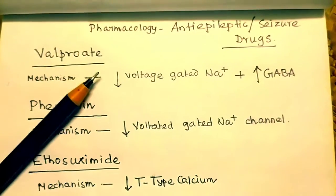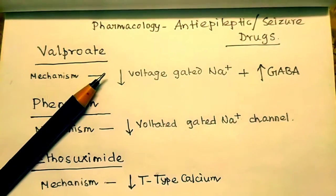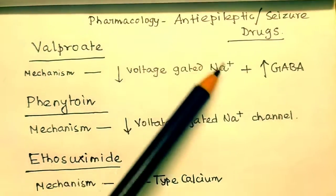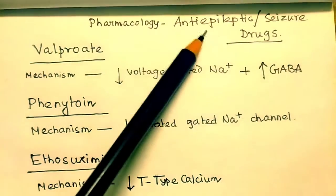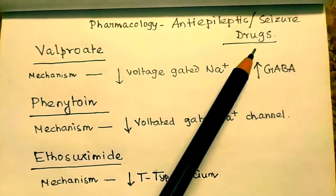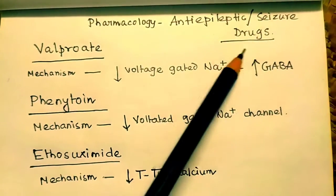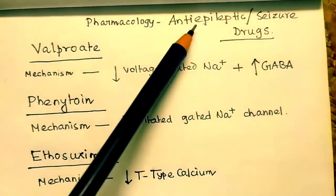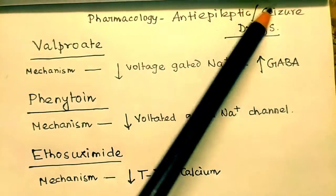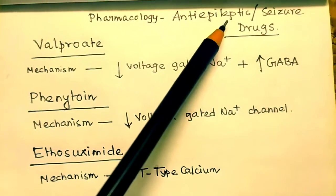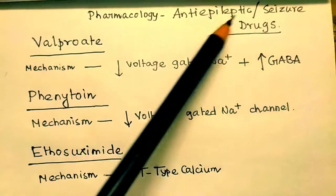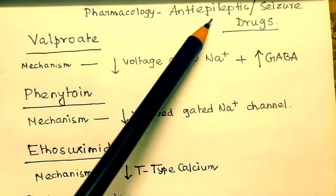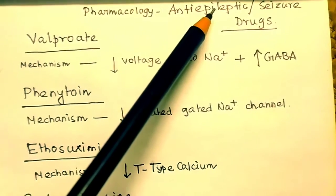Hello everyone, I am Shahan Laik and today we will learn about the pharmacology of anti-epileptic drugs, also known as seizure drugs. So, what is epilepsy or seizures? Seizures or epilepsy occur due to an increase in the electrical activity in our brain.